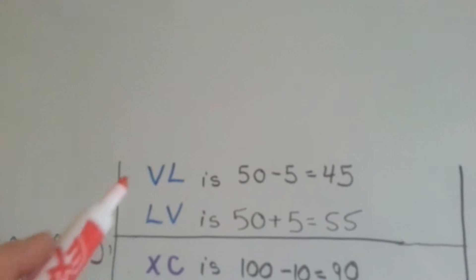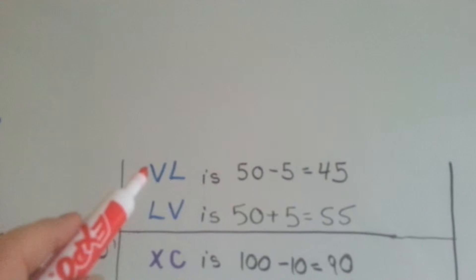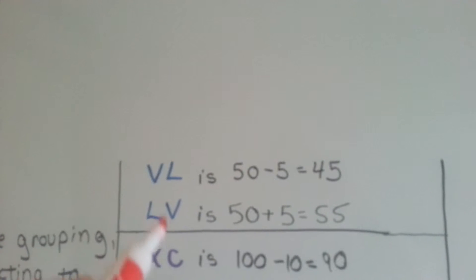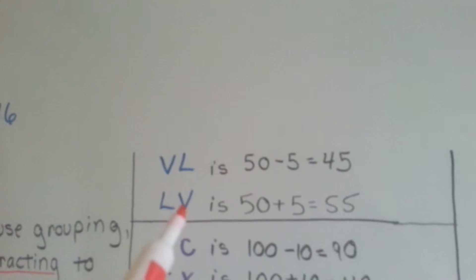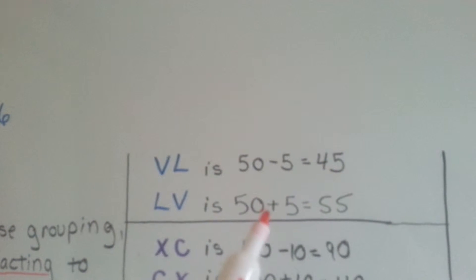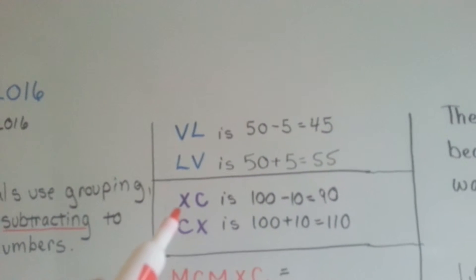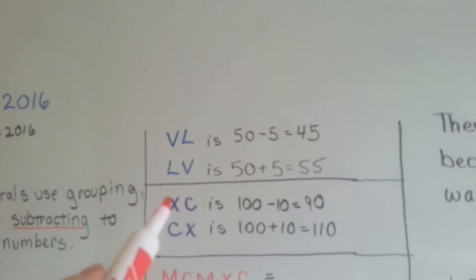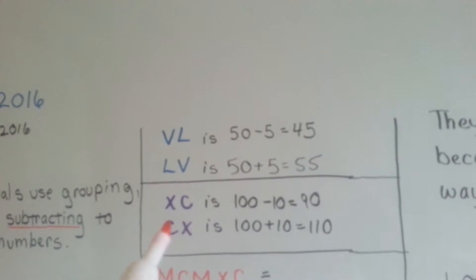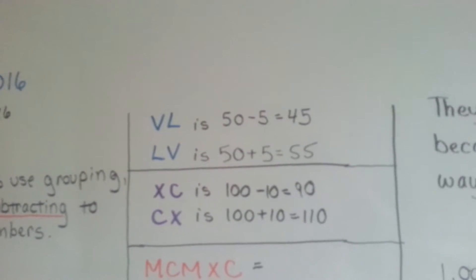If we put a V to the left of the L, it means 5 from 50 or 45. If we put the V on the right side of the L, it means 50 plus 5, 55. If we put the X on the left of the C, it means 100 minus 10. If we put it on the right side, it means 100 plus 10. 110.